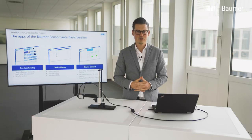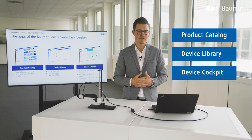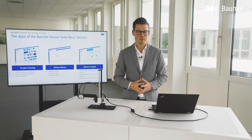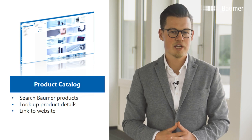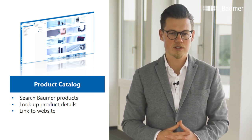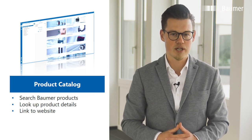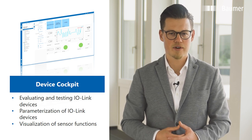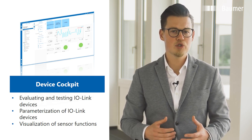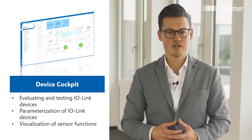The basic version contains three apps: the product catalog, the device library, and the device cockpit. Especially the device cockpit is very powerful when it comes to sensor function visualization. In the product catalog, all supported Baumer products are listed and you can directly search for product details. In the device cockpit, you can evaluate and test IO-Link devices, parametrize connected devices, and visualize the sensor functions.